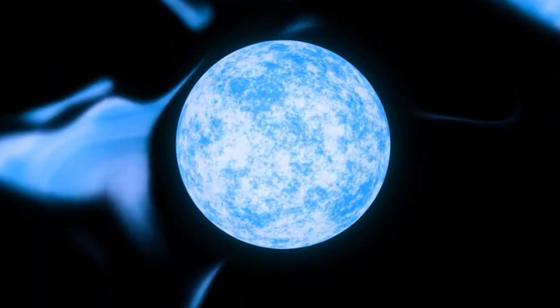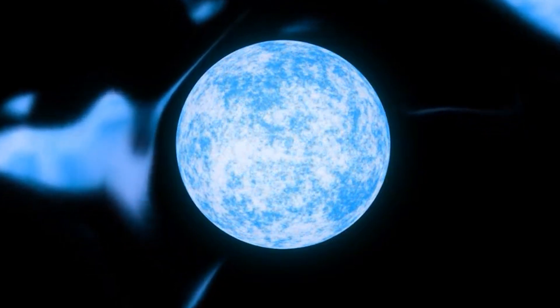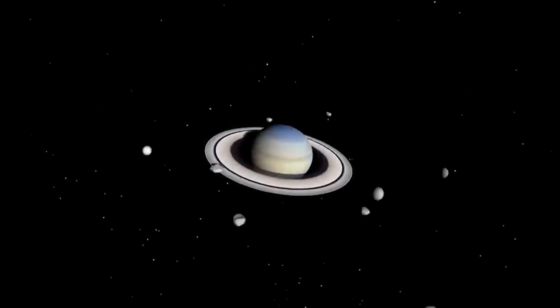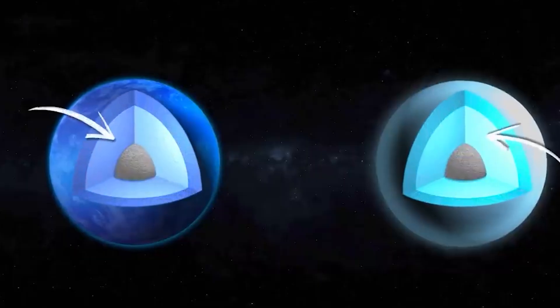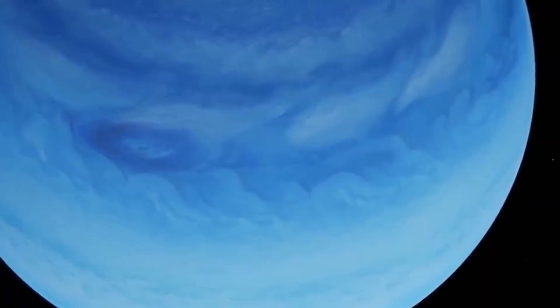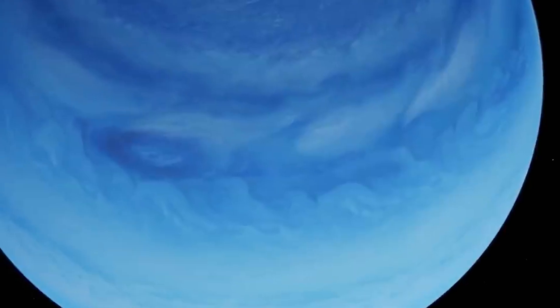Neptune's atmosphere is layered with aerosols that play distinct roles. The lower layer contains hydrogen sulfide ice, which is responsible for darker regions near the poles. A thin haze of methane ice particles forms in the middle layer. These particles contribute to Neptune's rich blue color.